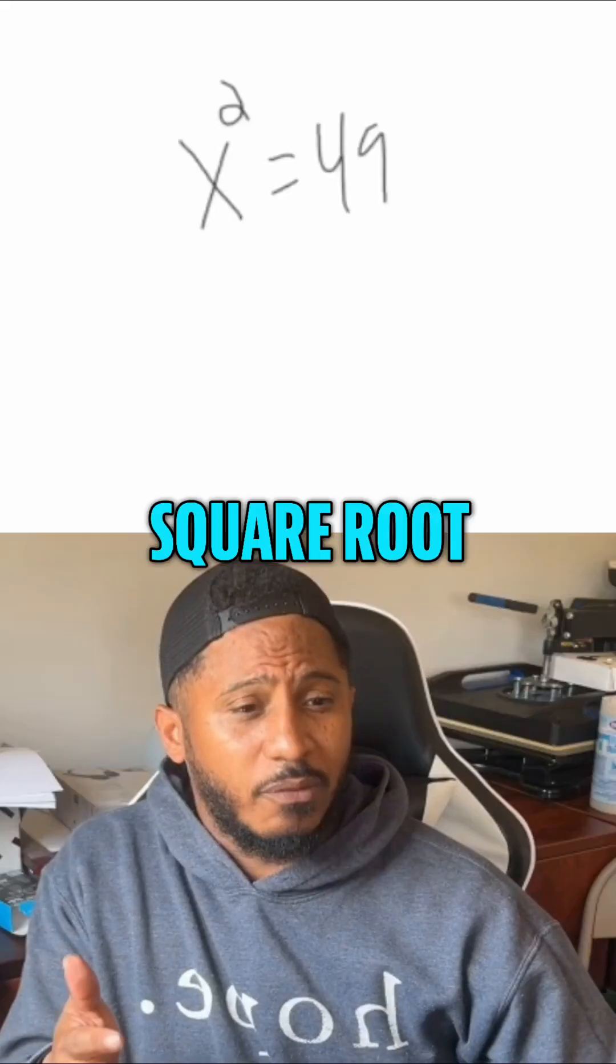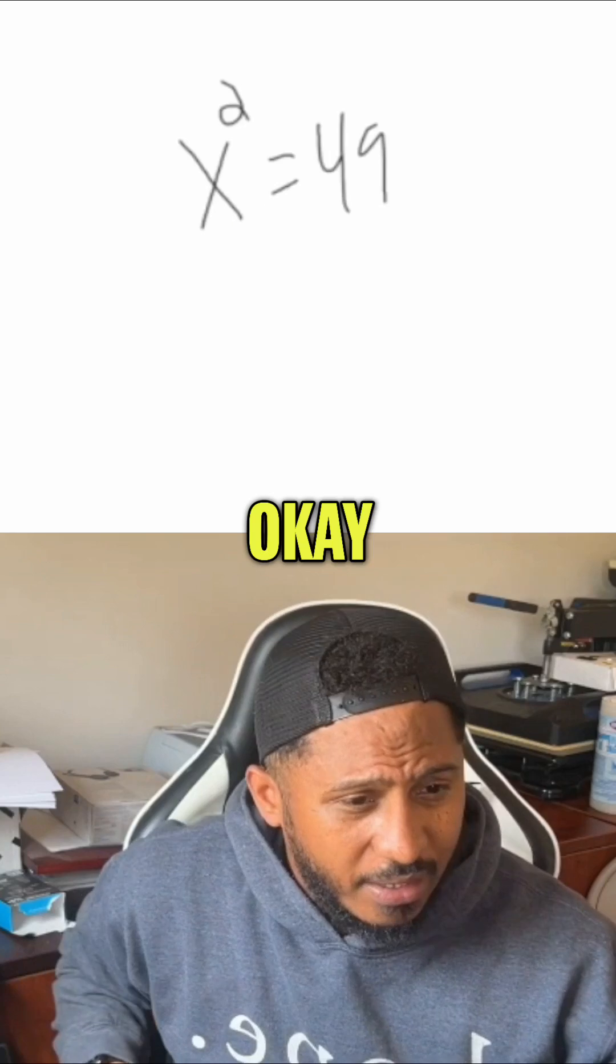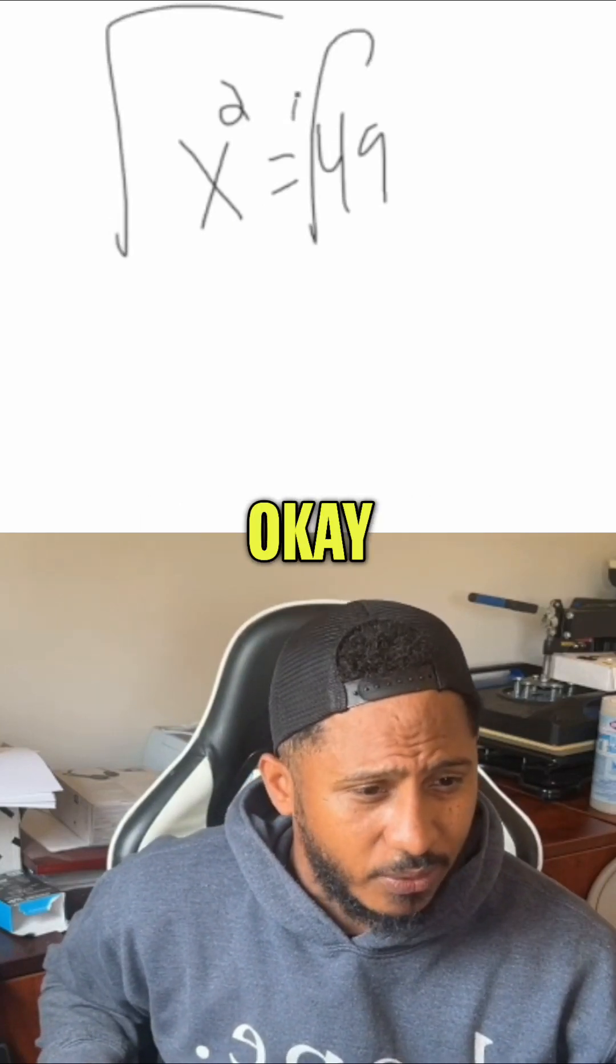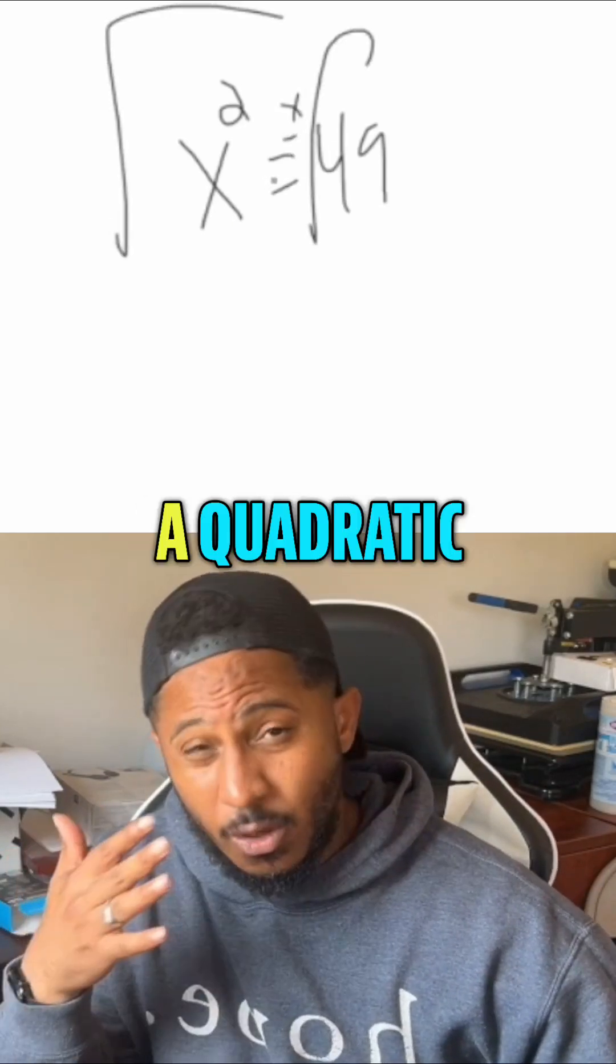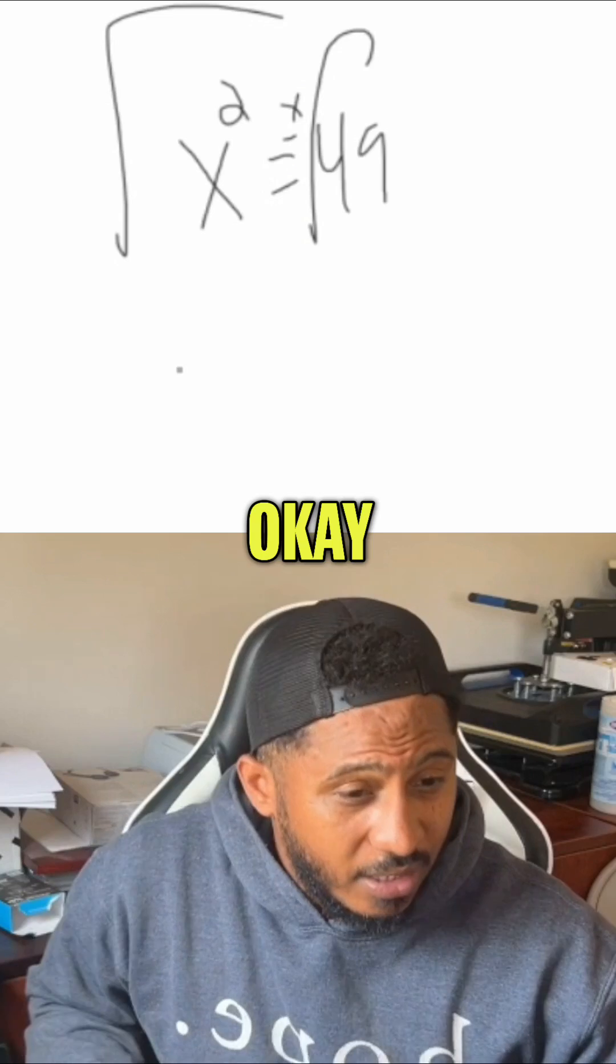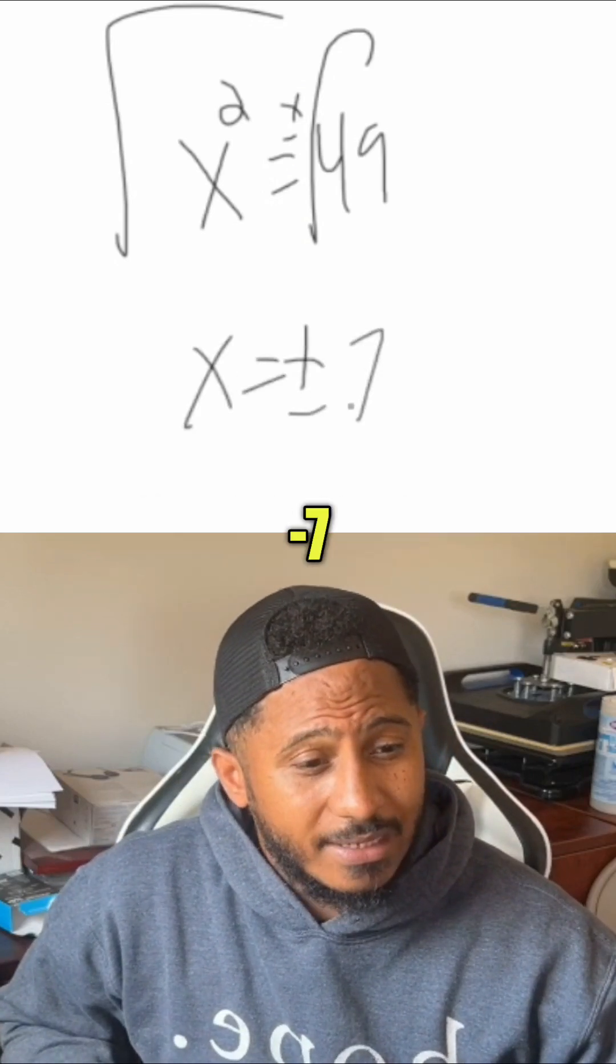So here, we take the square root of both sides. Don't forget that plus or minus. We get two solutions, which makes sense. Our quadratic equation has two solutions. So here x would equal plus or minus seven.